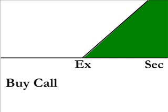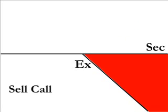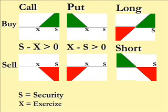Here's a graph for someone who buys a call — it only has intrinsic value if the stock rises above the exercise price. Here's a graph of a seller of a call, bearing a loss if the stock rises. Here's a graph of all four positions, and notice we've added a long position showing gains to the right and losses to the left, and likewise for a short position where there is a flip.